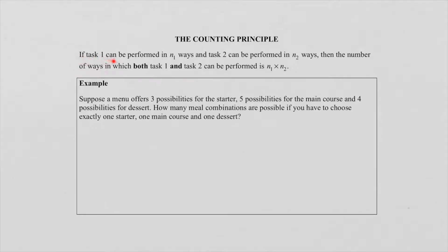If task 1 can be performed in N1 ways and task 2 can be performed in N2 ways, then the number of ways in which both task 1 and 2 can be performed is N1 times N2. This is very important to remember that we always want to know how many ways we can perform a certain task or more than one task. The counting principle then says to know the total number of ways we multiply each one of these tasks with one another. Let's now look at an example to illustrate this.